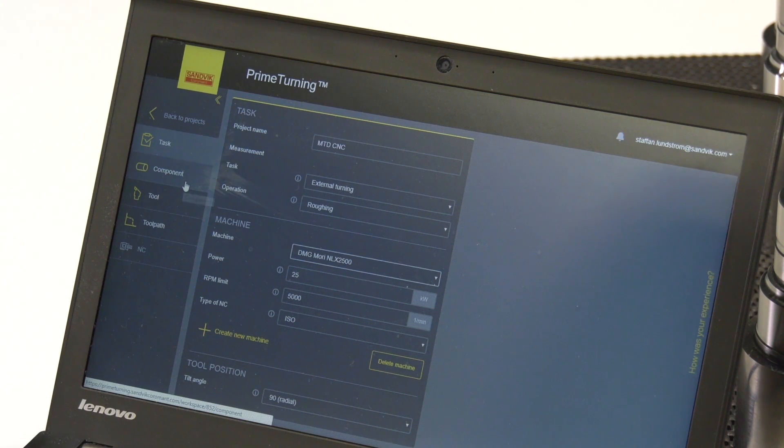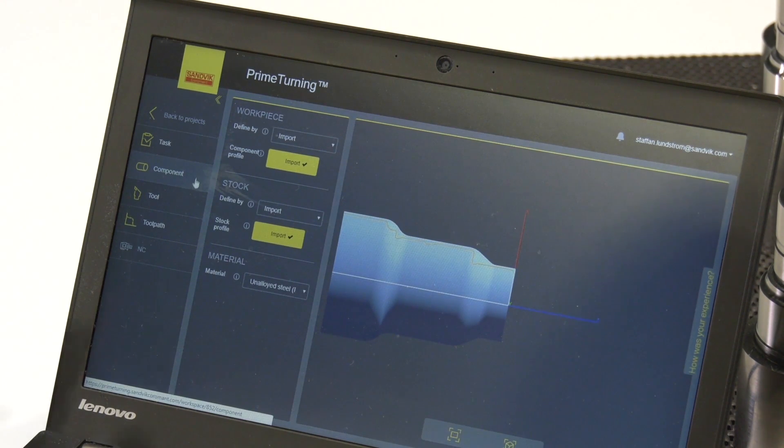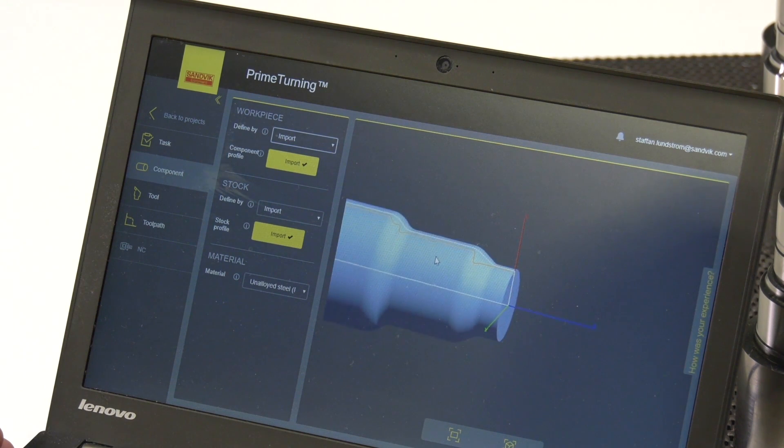From there you go on to the component. So these two are the input tabs. And here you can either import files or you can define them by coordinates. So here we have, let's say the yellow part is the profile that we will machine today. But you can also then import your blank.